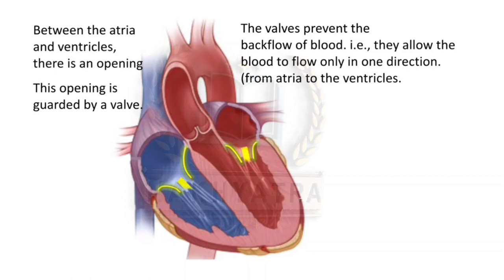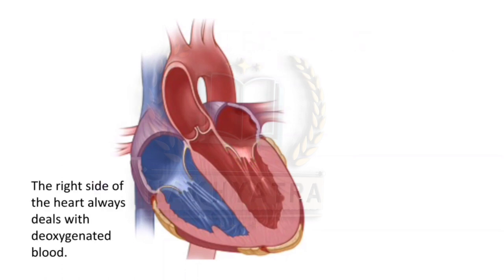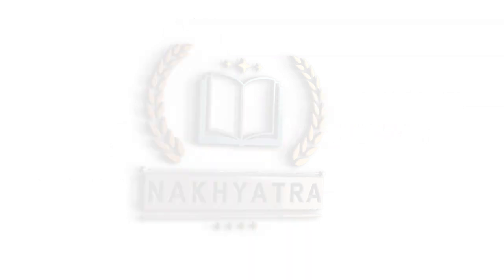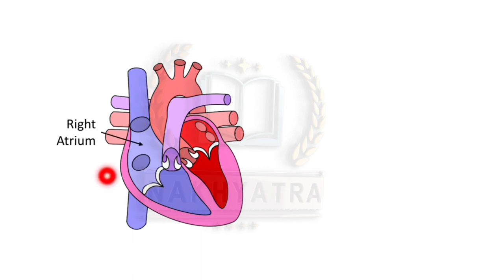The right side of the heart always deals with deoxygenated blood. The deoxygenated blood enters into the right atrium through the two venae cavae. The left side of the heart always deals with oxygenated blood.